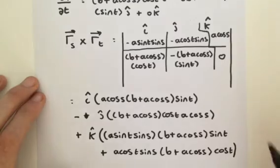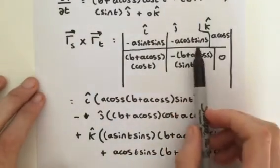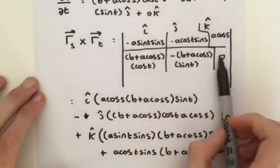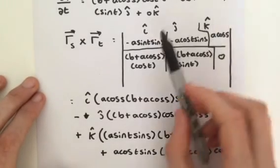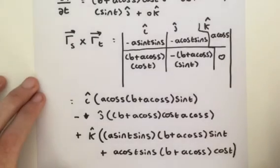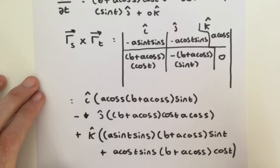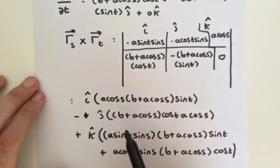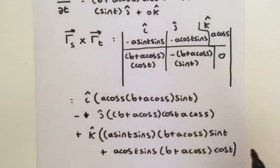So that is the result of our cross product. Cover the i column, that times that minus that times that. Then, we find the j component, cover the j column, that times that minus that times that. And, finally, for our long k component, that times that minus that times that, and it gives us this. So, in the next video, we will completely simplify this down and then take the magnitude and we should find a very easy and pleasing answer.